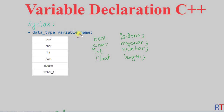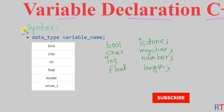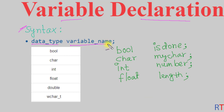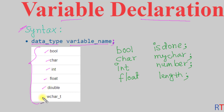In this video we're going to see how we can declare a variable in C++ programming. The syntax is: first we have the data type, followed by the variable name, and at the end we have the semicolon. The data type can be any one of the following: boolean, character, integer, float, double, or wide character.